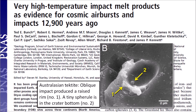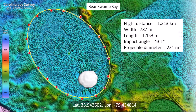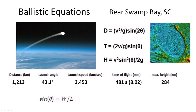The elliptical cavity is just a few micrometers in length, which is millions of times smaller than Bear Swamp Bay. The physical forces that make a crater are somewhat invariant of scale, but the main difference is that target strength dominates the excavation of microcraters, whereas gravity plays the dominant role for large craters. Bear Swamp Bay is located 1,213 kilometers from Lake Michigan, which is assumed to be the point from which the ice boulder that made the basin was launched. The basin has a width of 787 meters and a length of 1,153 meters. The width-to-length ratio corresponds to an impact angle of 43.1 degrees. The diameter of the glacier ice projectile that made the basin is estimated to be 231 meters, which is one-fifth of the basin's length. Ballistic equations indicate that the glacier ice boulder was launched at a speed of 3.453 kilometers per second. It had a flight time of 8.02 minutes and reached a height of 284 kilometers above the surface of the Earth. The trajectory was a suborbital spaceflight in the vacuum of space.